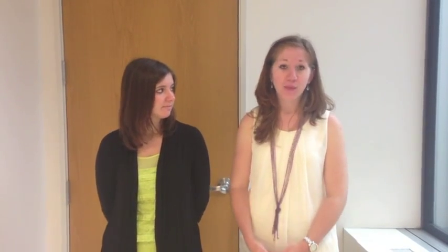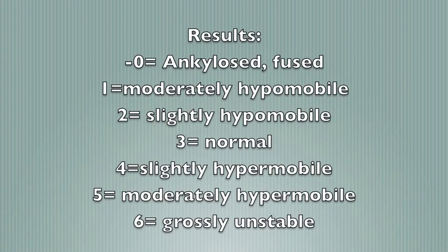While the therapist is performing this assessment, they're looking for the quality of motion, if there's any sounds or crepitus in the joint, and the quantity of motion, which is based on a 0 to 6 scale — 3 being normal, 0 being ankylosis or no movement, and 6 being completely unstable. You'll also want to assess the end feel as well as the pain resistance sequence.